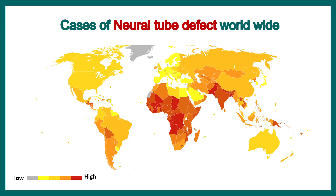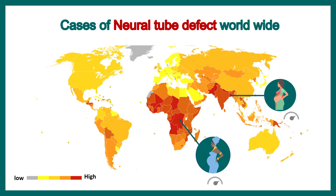If you look at the global map, third world countries are more affected where vitamin, mineral, or nutrition deficiency is a big problem, whereas the incidence of neural tube defects is less common in the developed world.